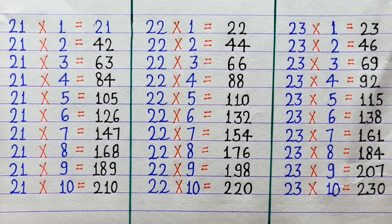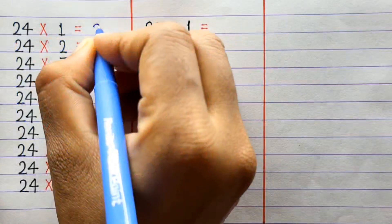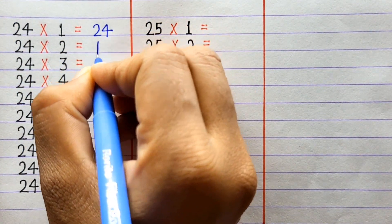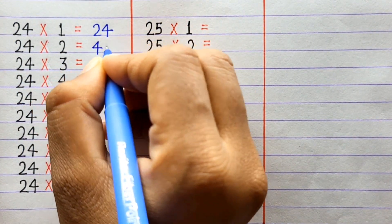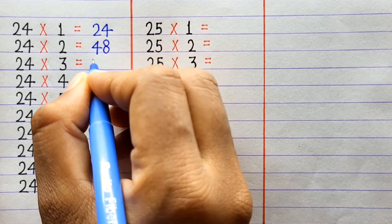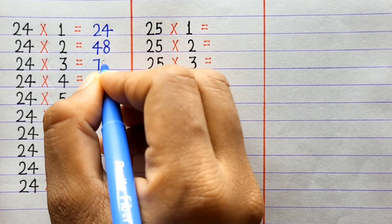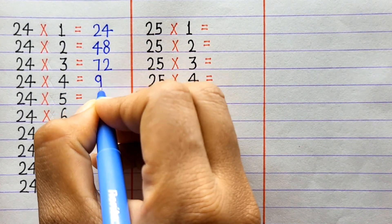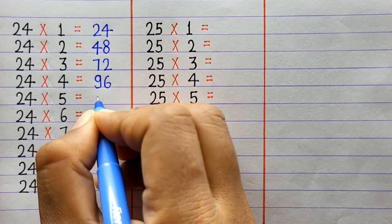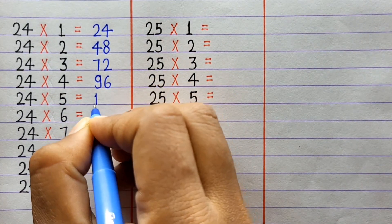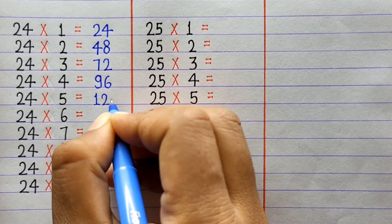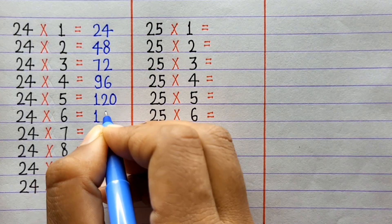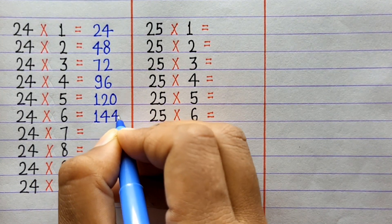24×1=24, 24×2=48, 24×3=72, 24×4=96, 24×5=120, 24×6=144.